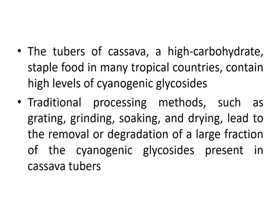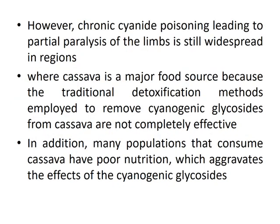Traditional processing methods such as grating, grinding, soaking, and drying lead to the removal or degradation of a large fraction of the cyanogenic glycosides present in the cassava tuber. However, chronic cyanide poisoning leading to partial paralysis of the limbs is still widespread in regions where cassava is a major food source, because the traditional detoxification methods employed are not completely effective. Many populations that consume cassava also have poor nutrition, which aggravates the effects of cyanogenic glycosides.